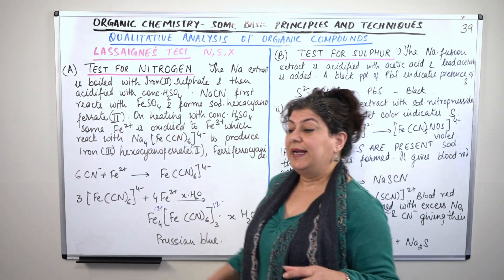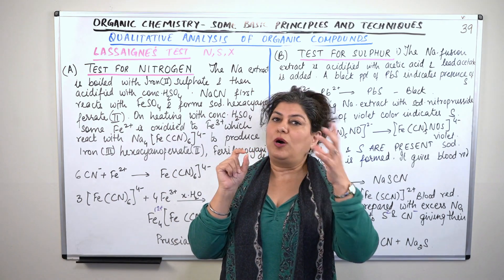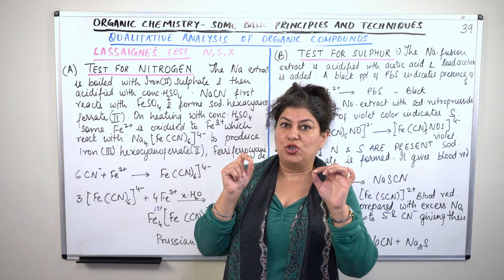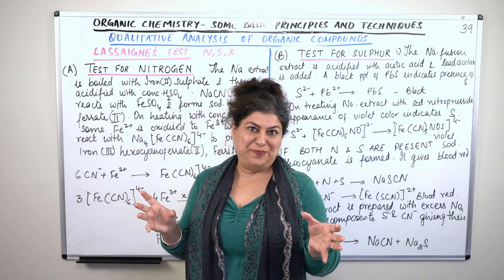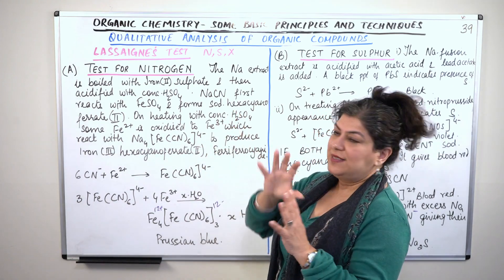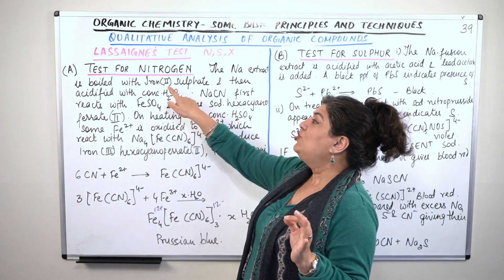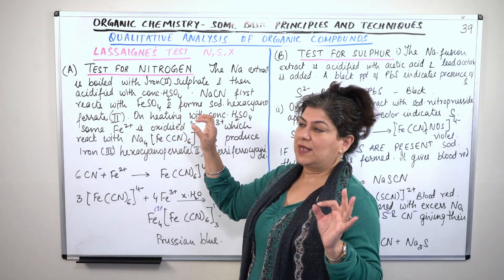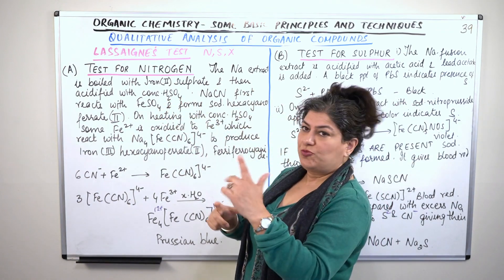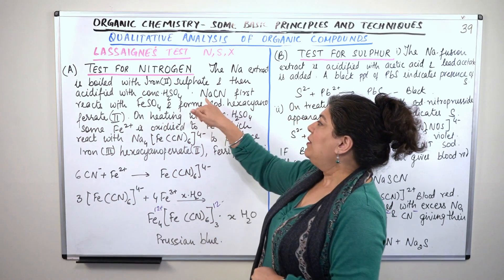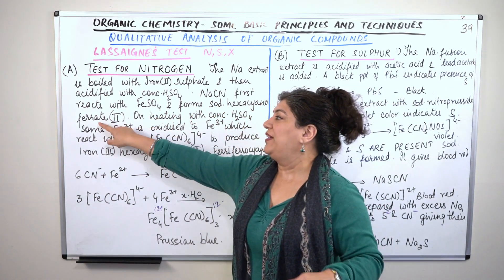When we add sodium to the organic compound in the Lassaigne's extract, the nitrogen present combines with carbon from the hydrocarbon and sodium to give sodium cyanide (NaCN). So cyanide ions are produced. Now, when we add iron(II) sulfate — ferrous sulfate — to the sodium extract, the sodium cyanide reacts with the ferrous sulfate. The result is the formation of sodium hexacyanoferrate(II), which is a complex salt.